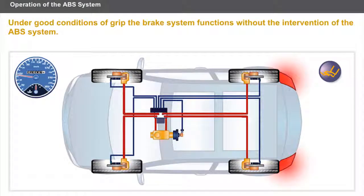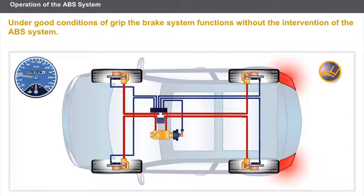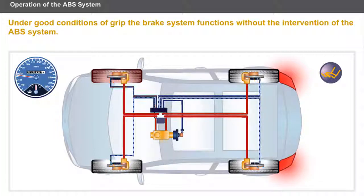Under conditions of good grip and during normal braking, the brake system operates without the intervention of the ABS system. However, during emergency braking, one or several wheels may lock. The computer monitors the acceleration and deceleration speeds of the wheel via the sensors. If braking regulation becomes necessary, the computer sends a command to the solenoids and activates the pump.